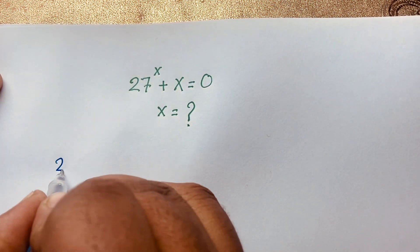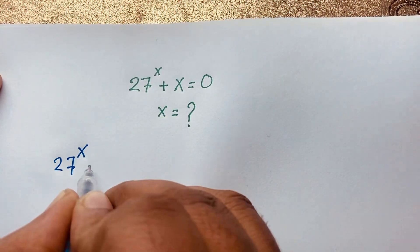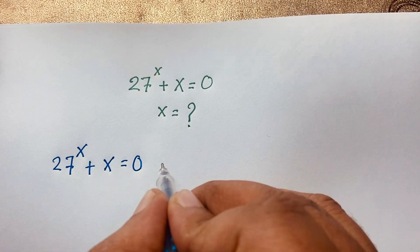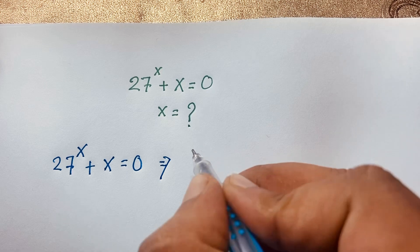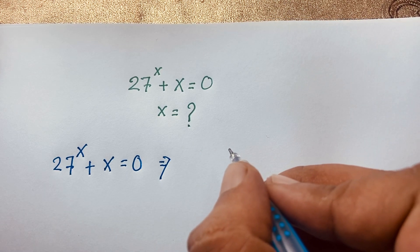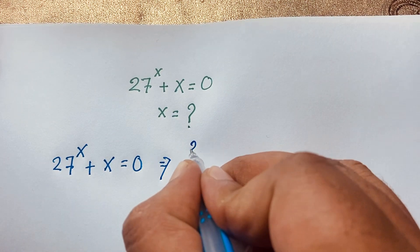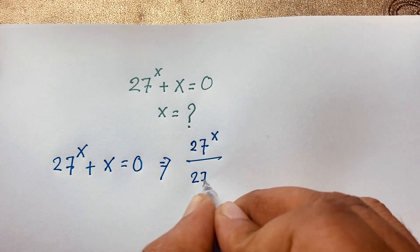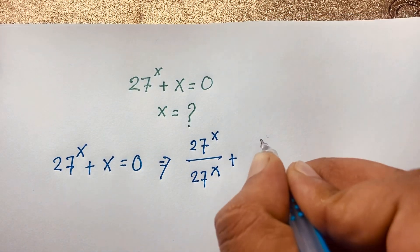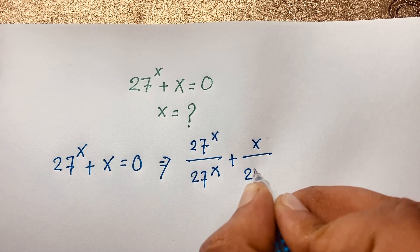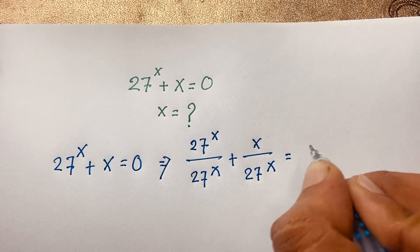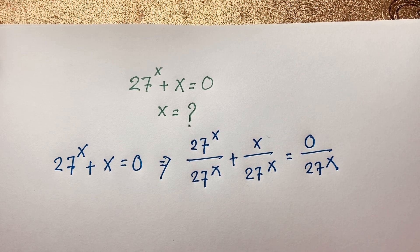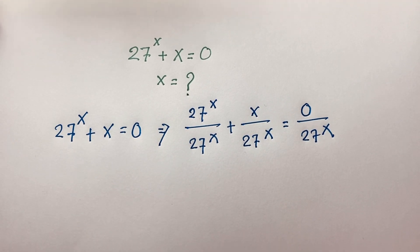Our question is 27^x + x = 0. Now at this moment I divide both sides by 27^x. So I can write this expression as 27^x / 27^x + x / 27^x = 0, dividing both sides by 27^x.